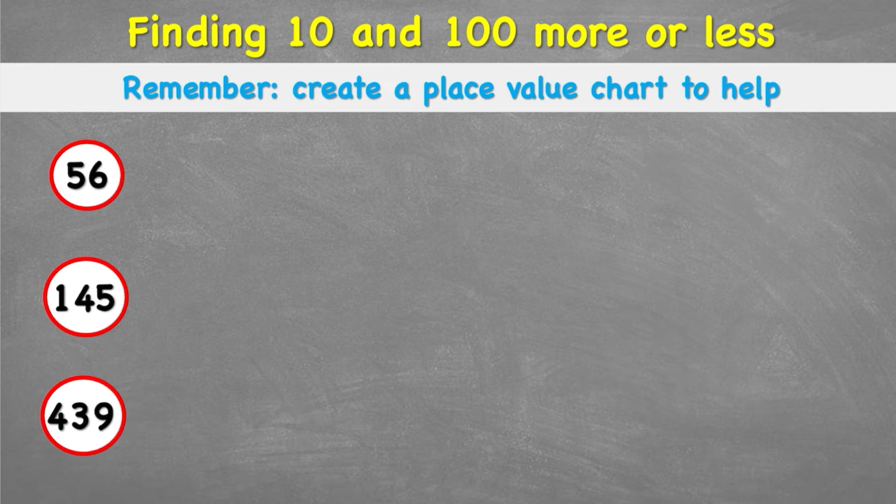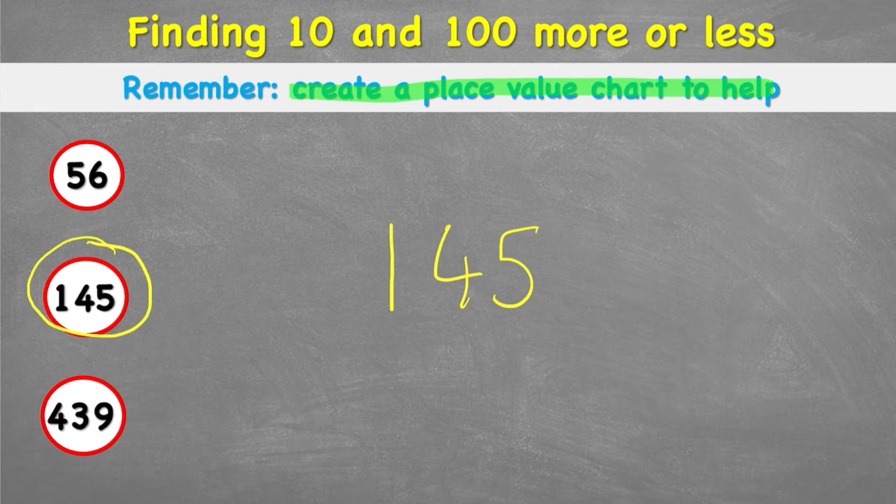Let's have a look at a bigger number. Let's have a look at example 2, 145. So I have 145. And now let's remember our tip again, which was to create a place value chart to help us. Which means I'm going to put my ones or units, tens, and now hundreds over the top. Now I'm going to look for what 10 more would look like.